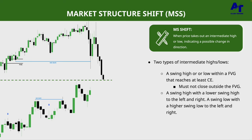Now let's look at an example of the second type. We have a swing high — if we look to the left we have a lower swing high, and to the right we also have a lower swing high. This king swing high, with a lower swing high to the left and to the right, gets taken out right there — that is a shift in market structure. We then trade lower into a fair value gap and go higher. That's how you use a market structure shift to indicate a possible change in direction.